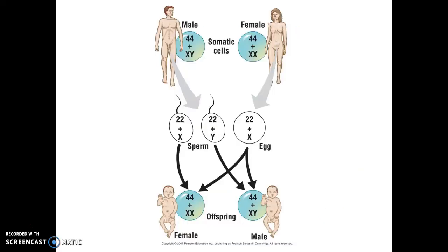So here we see a son will receive a sperm cell with a Y chromosome in it from the father and an egg cell with an X chromosome from the mother, whereas a daughter will receive a sperm cell with an X chromosome and an egg cell with an X chromosome.